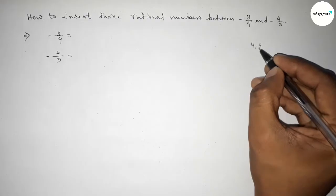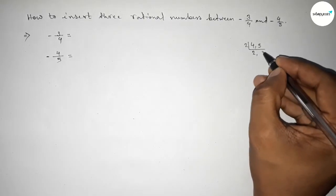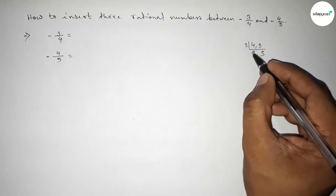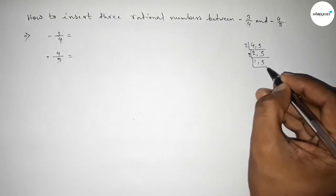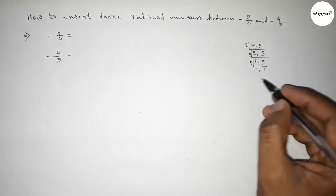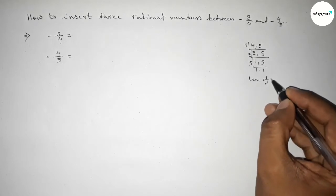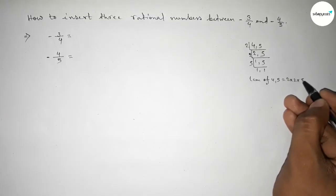So here, 4 and 5. Factorizing this: first divided by 2, then also divided by 2, and next divided by 5. So the LCM of 4 and 5 equals 2 × 2 × 5 × 1 × 1, which is 20. So LCM equals 20.